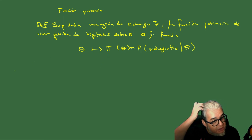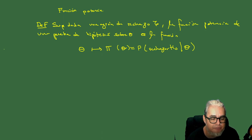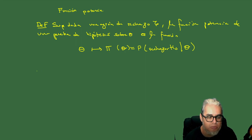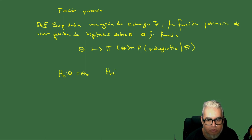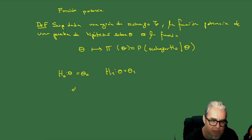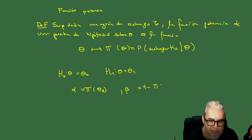Habíamos dicho la vez pasada que alfa y beta, que son las probabilidades de los errores de tipo 1 y de tipo 2, no son complementarias. Pero si logramos escribir nuestro problema como dos hipótesis simples — H₀: θ = θ₀ y H₁: θ = θ₁ — entonces la probabilidad alfa la podemos escribir como π(θ₀), y beta la vamos a escribir como el complemento de π(θ₁).